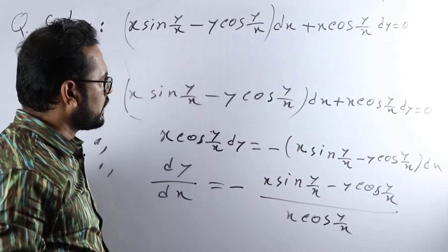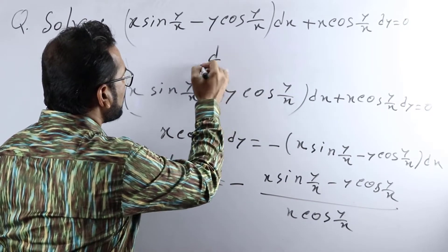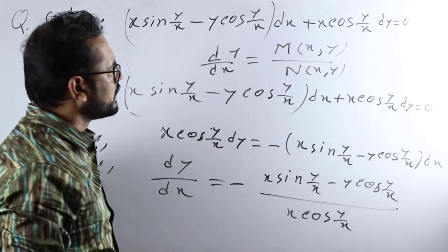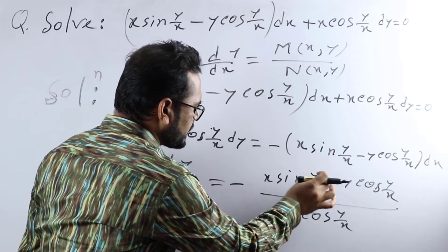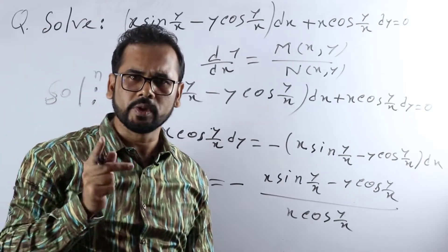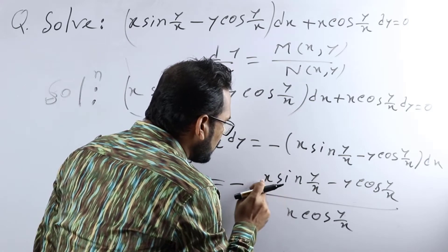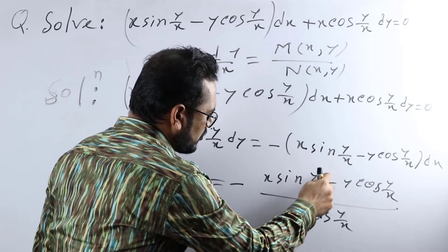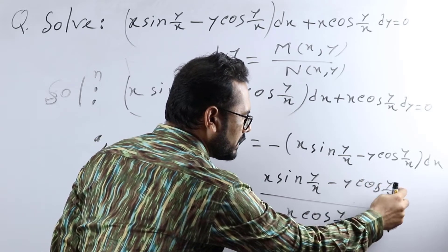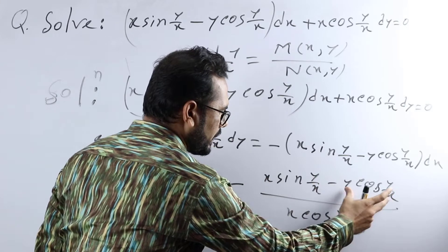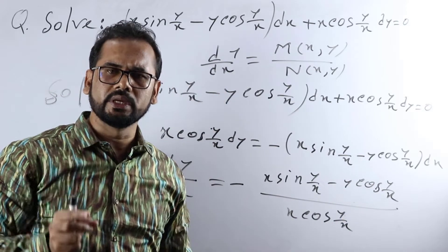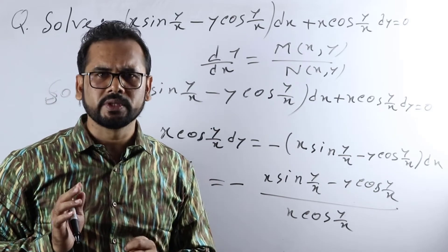This format is dy/dx equals M(x,y) over N(x,y), the standard form of a differential equation. If the individual terms of the differential equation have the same degree, we say it is a homogeneous differential equation. Here the power of every variable in every term is 1 — x power 1, y power 1 throughout — so every individual term has the same power, and therefore this is a homogeneous differential equation.